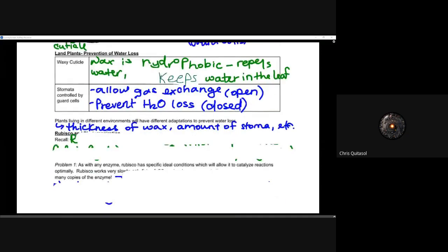Plants living in different environments will have different adaptations to prevent water loss. You think about how much wax, the thickness of the wax specifically, the amount of stoma within the leaf. Those are all ways with which different plants in different environments can reduce the amount of water that happens in their cell.